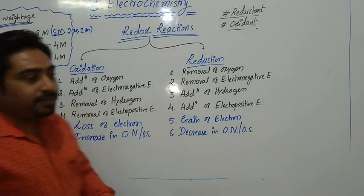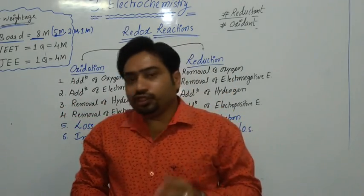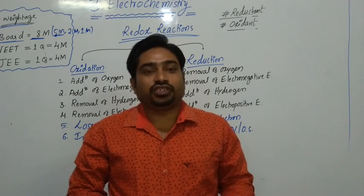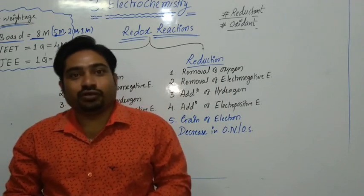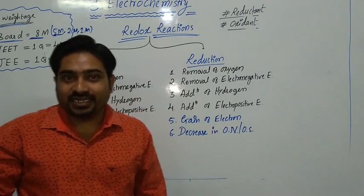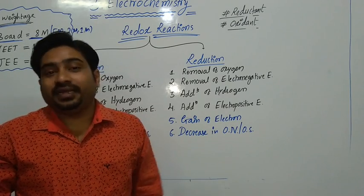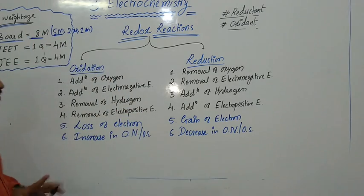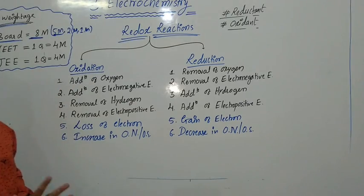The 3-mark question will typically be a numerical problem — it may be on the Nernst equation, calculation of cell potential or electrode potential, calculation of the Gibbs free energy (ΔG value), or calculation of the equilibrium constant of a reaction. The 2-mark and 1-mark questions are memory-based questions.